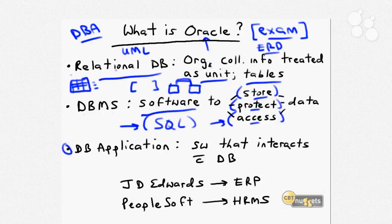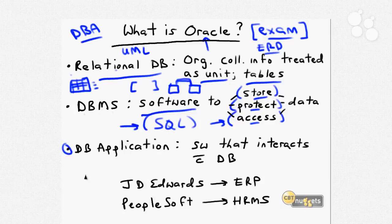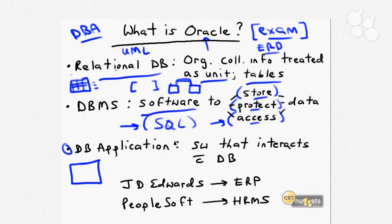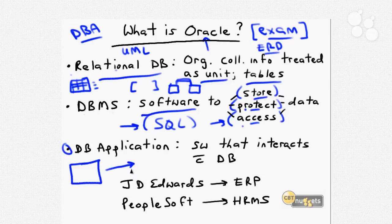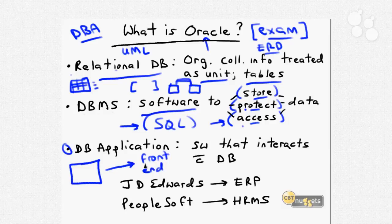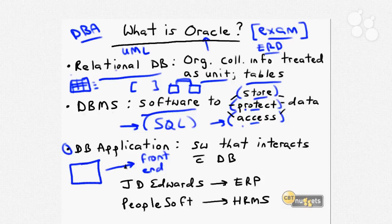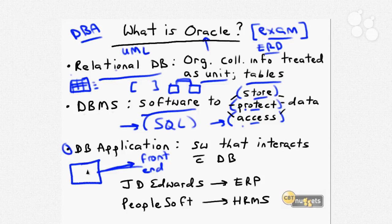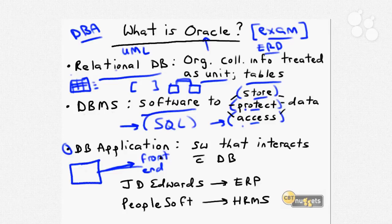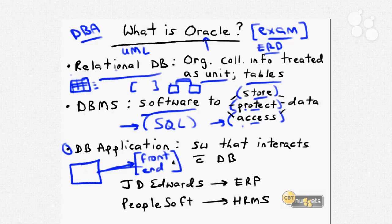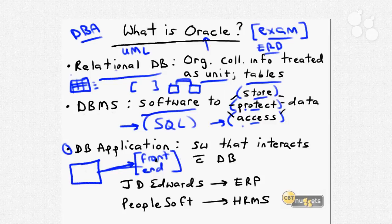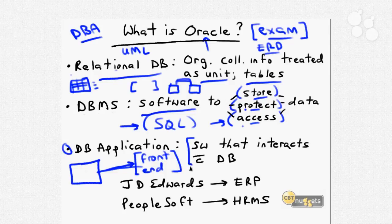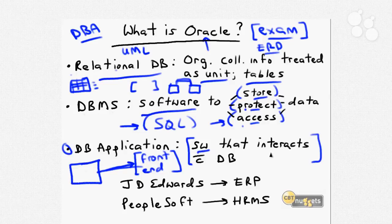Finally, we have the database application. Most of the time Oracle is not used just on its own, but rather Oracle database is used for the back-end storage, protection, and access of your core data. What's presented to your users is some sort of front-end application, and this could be a desktop application installed locally, a Microsoft .NET program, or Java. Using various network connectivity methodologies, that front-end application communicates with Oracle database on your database servers.